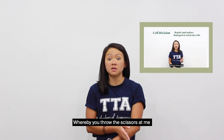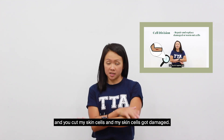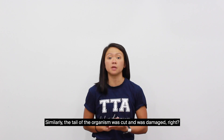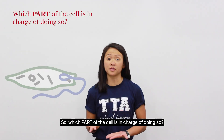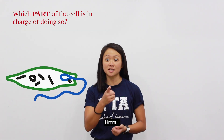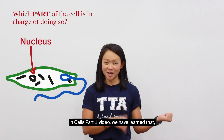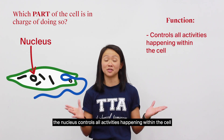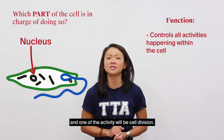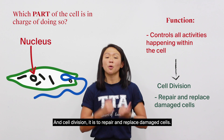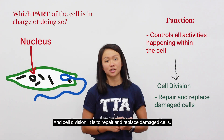In Part 1, we saw how skin cells got damaged and then repaired. Similarly, the tail of the organism was cut and damaged. So which part of the cell is in charge of doing so? It is the nucleus. We learned that the nucleus controls all activities happening within the cell, and one of those activities is cell division. Cell division is to repair and replace damaged cells.